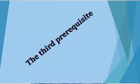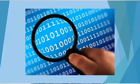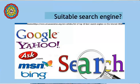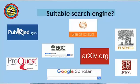The third prerequisite is suitability of search engine. We have two types: general web search and database. The use of general web search engines like Google, Yahoo, and Bing will not be useful during literature review. Rather, we have to do database search.